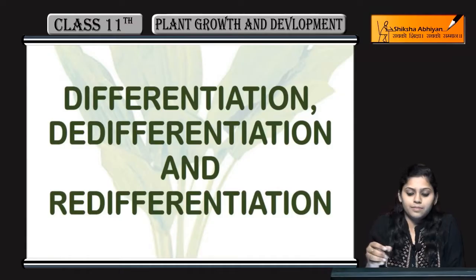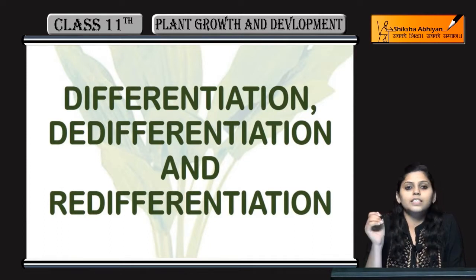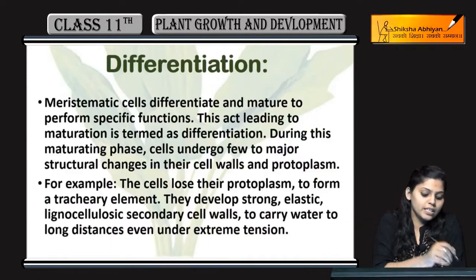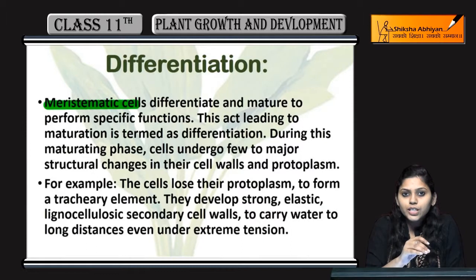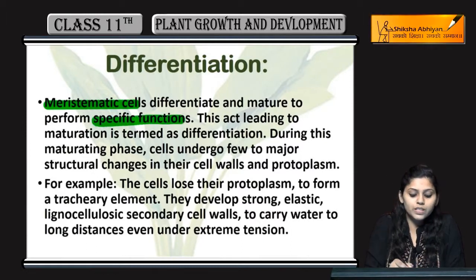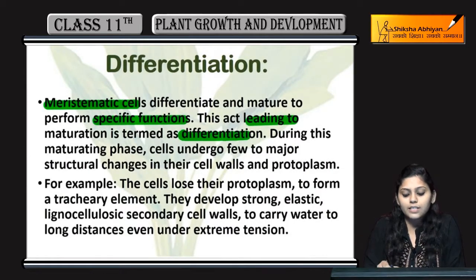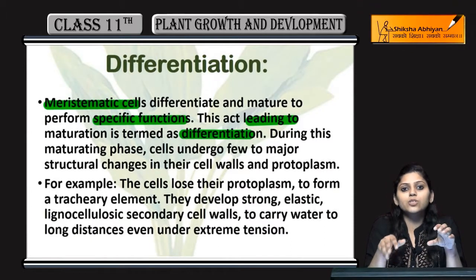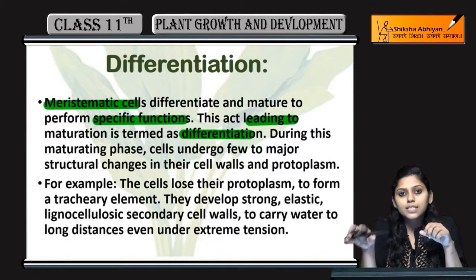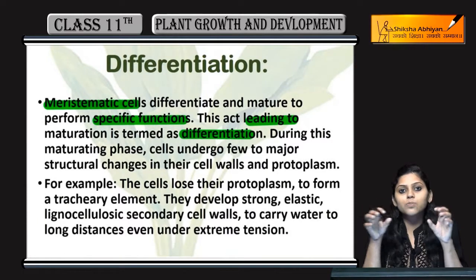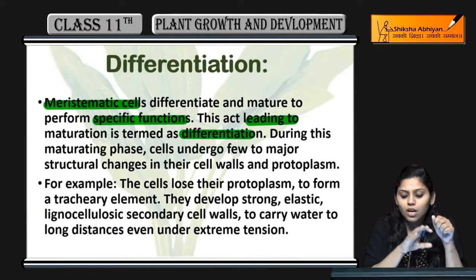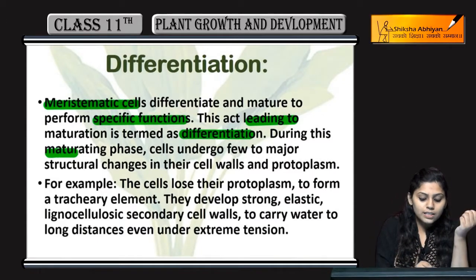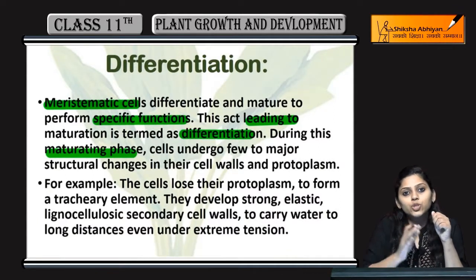Next topic is differentiation, de-differentiation, and re-differentiation. Meristematic cells differentiate and mature to perform specific functions — this act leading to maturation is termed as differentiation. Meristematic cells divide and form cells that perform particular functions. When cells mature to perform specific functions, this process is called differentiation.